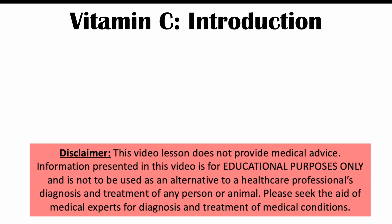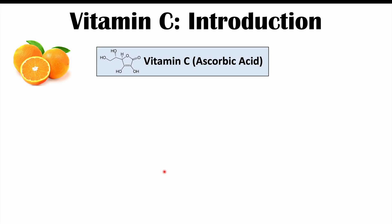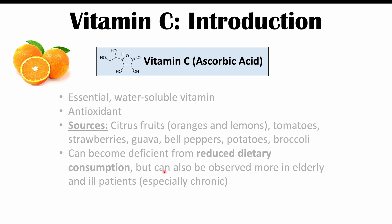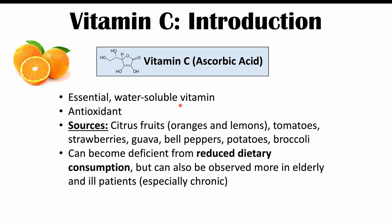This lesson is on the signs and symptoms of vitamin C deficiency. Before we talk about those signs and symptoms, let's talk about what vitamin C is. Vitamin C is what we would call ascorbic acid. It is an essential water-soluble vitamin. It is an important antioxidant and it comes from a variety of dietary sources, including citrus fruits — oranges and lemons are classic sources — but we can also find it in tomatoes, strawberries, guava, bell peppers, potatoes, and broccoli.